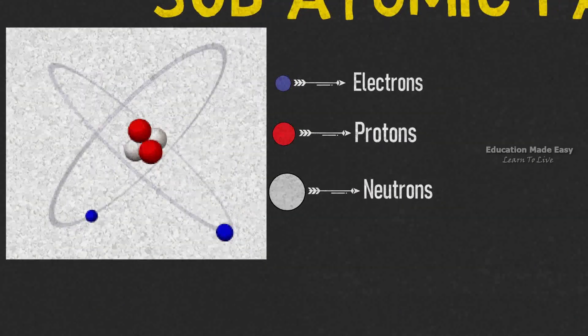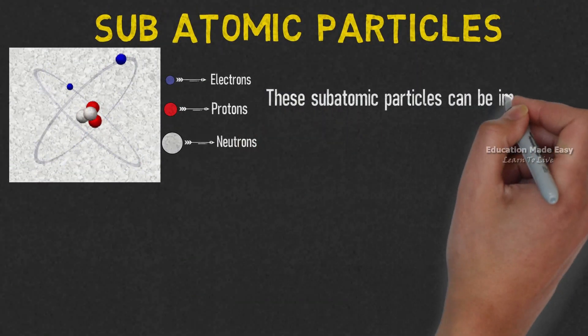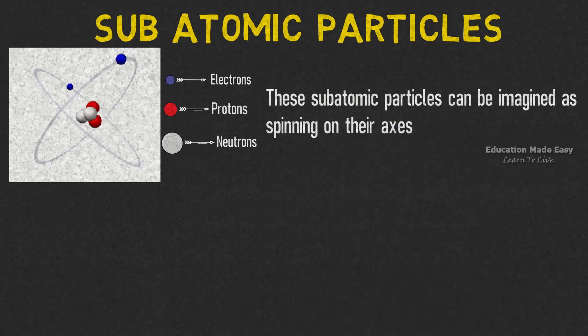The protons and neutrons together constitute the nucleus of the atom. These subatomic particles can be imagined as spinning on their axis.